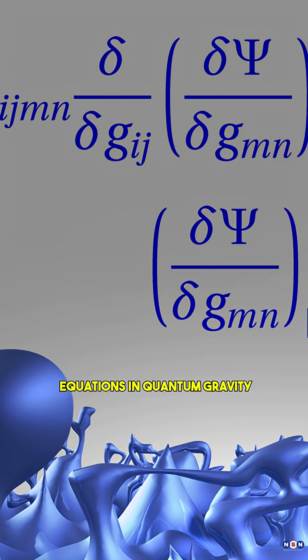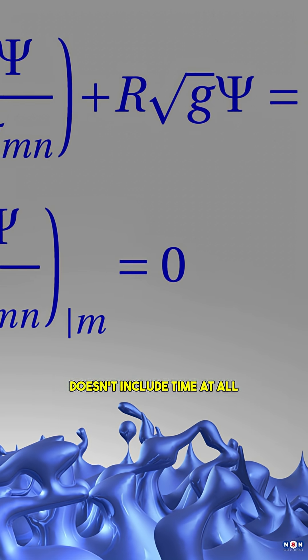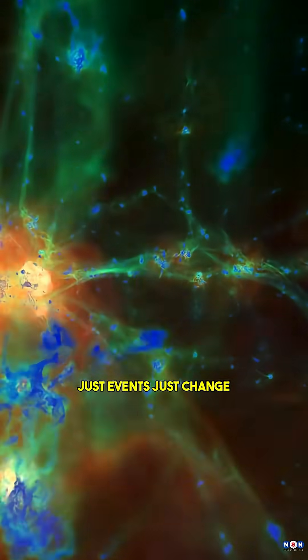In fact, one of the most important equations in quantum gravity, the Wheeler-DeWitt equation, doesn't include time at all, just events, just change.